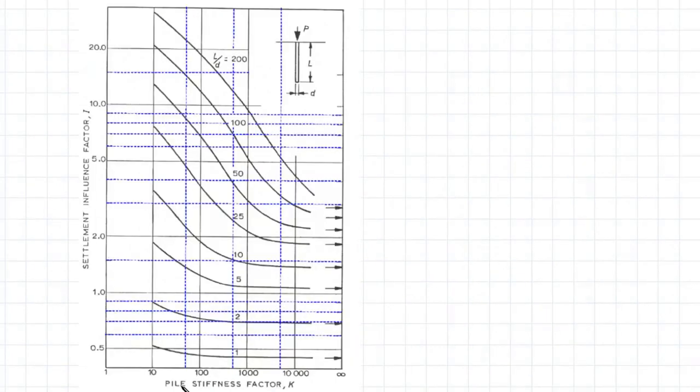In this chart here, once you have determined a value for K, you need to find the length to diameter ratio, and then you can project across horizontally to get a value for the influence factor I.